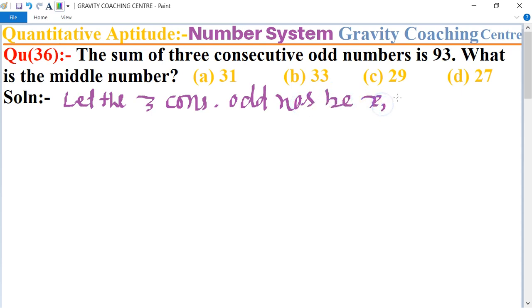x, x+2, and x+4. According to the question, their sum is given as 93, which means x